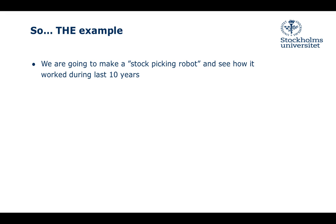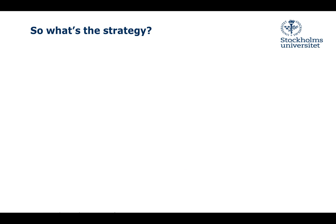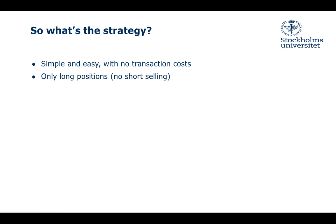The example we're going to use is making a stock picking robot and seeing how it worked during the last 10 years. 'Stock picking robot' is a fancy name — it's going to be a stock picking algorithm which will form a portfolio from some of the assets you have. You press a button, some magic is done by the algorithm, and at the end you have a list of stocks to invest in. The strategy will be simple and easy, because the idea of this course is still about how to code and address a problem with the computer tools you have.